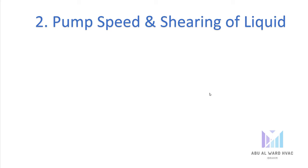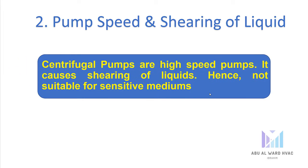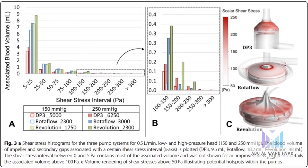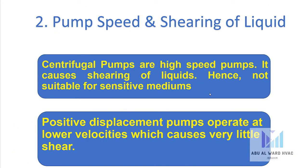The second aspect is pump speed and shearing of liquids. Centrifugal pumps are high-speed pumps, which causes shearing of liquids, making them not suitable for sensitive mediums. Positive displacement pumps operate at lower velocity, which causes very little shear.